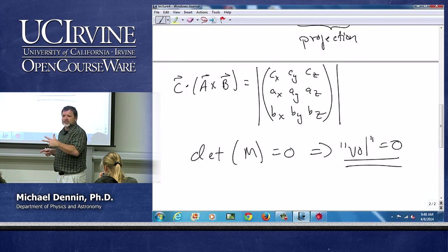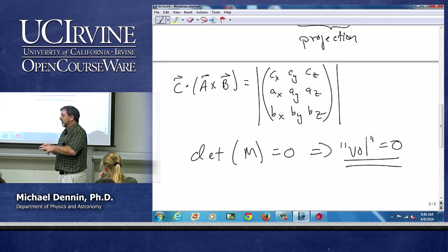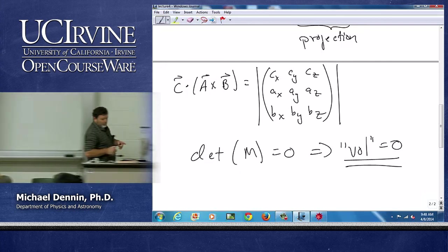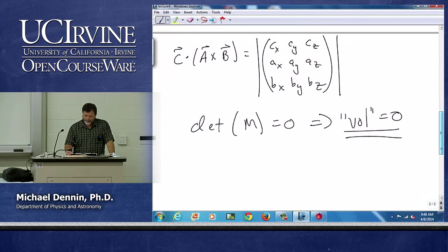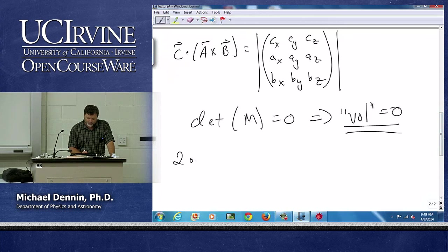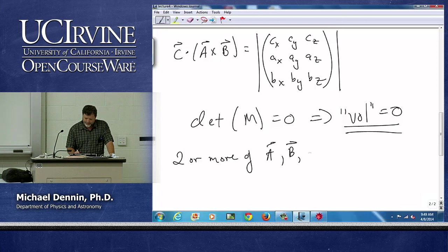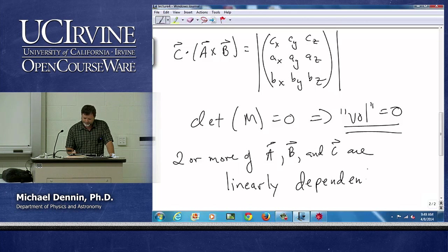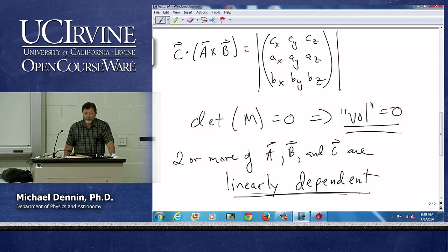So I can only have two independent vectors in the plane. So if c is in the plane, I'm done. Or if a cross b is zero, that means a and b are parallel. So if any of those conditions occur, what I've just found out is that that means two or more of a, b, and c are linearly dependent.